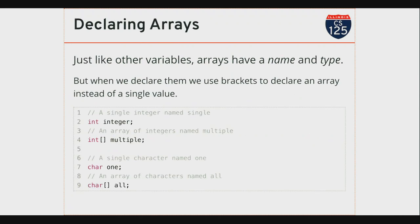Let's look at some syntax for actually doing this in Java. On line two I'm showing you how to declare a single integer — that's review from last time. On line four I'm declaring an array of integers, and you'll see what I've added is this bracket syntax. When I put brackets after the type in Java, I'm telling the computer that this variable called 'multiple' is not just going to store one int — it's going to store multiple integers, an array of integers. I don't know how many yet.